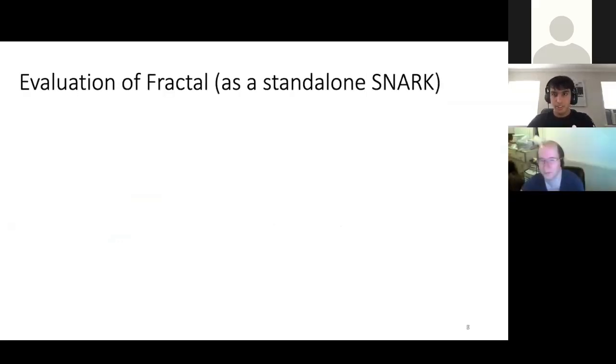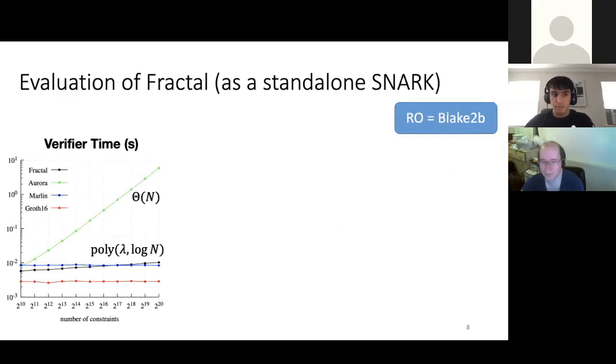So our construction fractal has the following asymptotics. These all match the best-known non-preprocessing post-quantum snarks. So quasi-linear prover, logarithmic verifier, logarithmic proof size. Proof times in minutes, verifier times in milliseconds. Proof size is standard regime for snarks in the 100 to 200 kilobyte range. But many people here are probably interested in seeing some actual numbers and graphs for this. And we have an implementation. So we can do this. So to run fractal, you need to fix a random oracle. So we fix that as Blake2b.